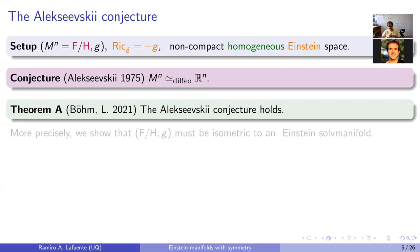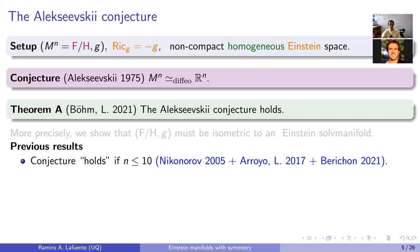The main goal of this series of talks is to explain aspects of the proof, hopefully simplifying algebraic complications and focusing on analytic-geometric arguments. Before that, let me mention previous results regarding the Alekseevsky conjecture. It was known to hold, up to finitely many exceptions, in dimensions up to 10, due to work by Nikonorov in 2005, joint work with Romina Arroyo, and later work by a student of mine.